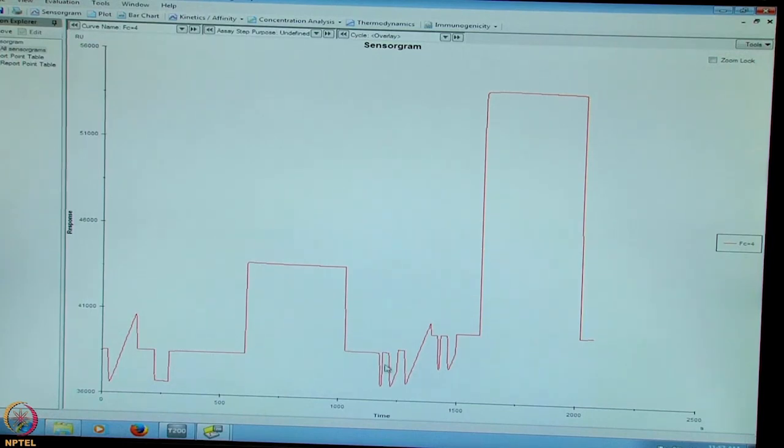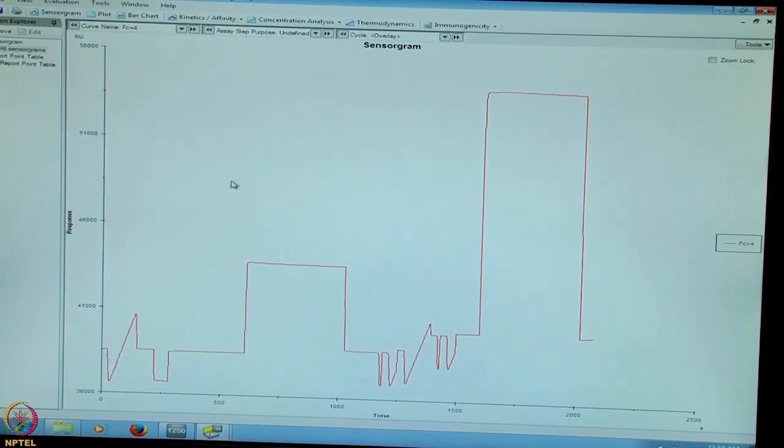Pulsing of the protein for the required number of RUs and then blocking of the extra sites with ethanolamine. The immobilization level is actually determined from this level subtracted to this level. Now this will conclude our immobilization procedure. We have successfully immobilized the required level of ligand for our next experiment.